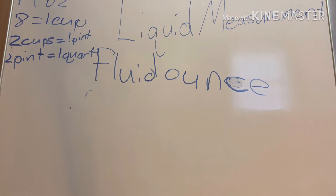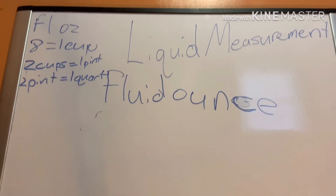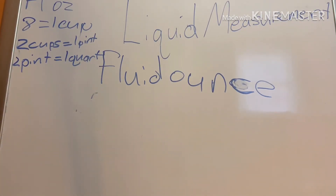A lot of people may go to a store and want something bigger than a quart but smaller than a gallon — that would be a half gallon. A half gallon equals two quarts. And to get a whole gallon, since you need two quarts for a half gallon, you need four quarts to make one whole gallon.